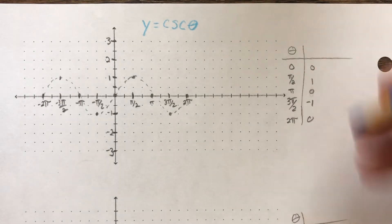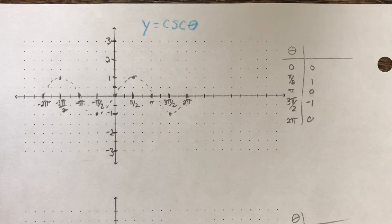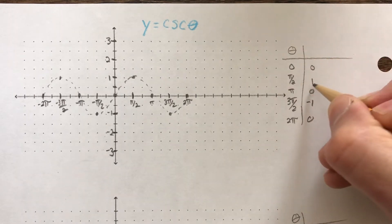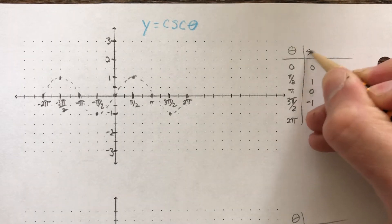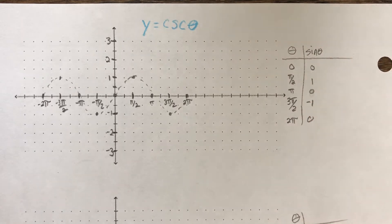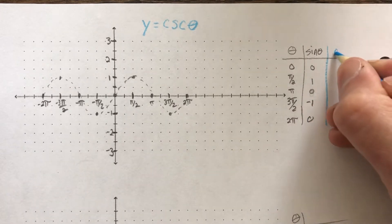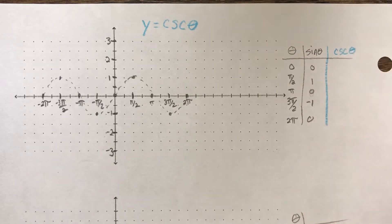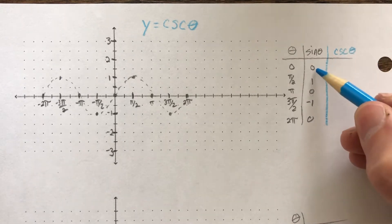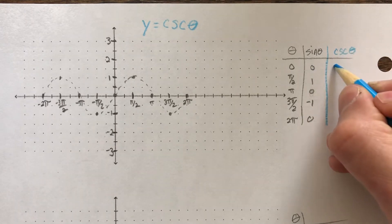So if the sine values are 0, 1, 0, negative 1, and 0 for the parent function, okay, for the cosecant, it's just the reciprocal, right? What's the reciprocal of 0? Well, that would be 1 over 0 or anything over 0, so that would be undefined.